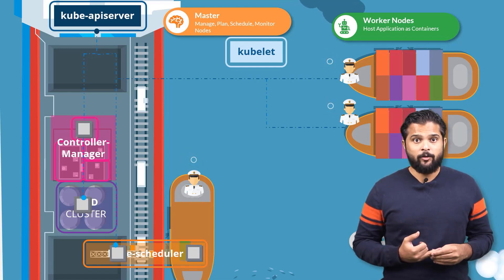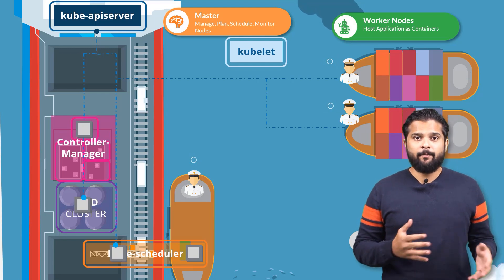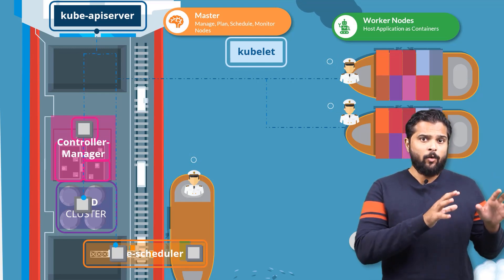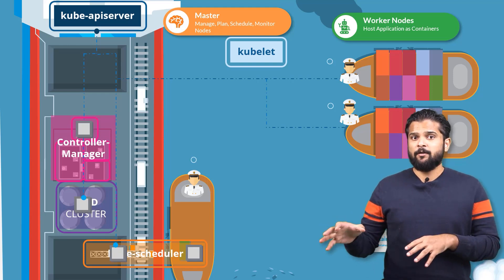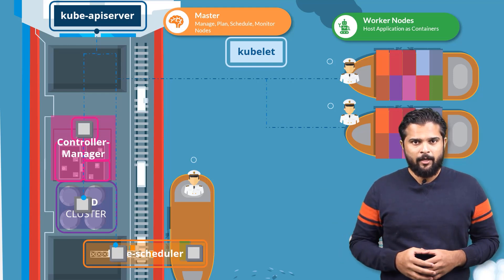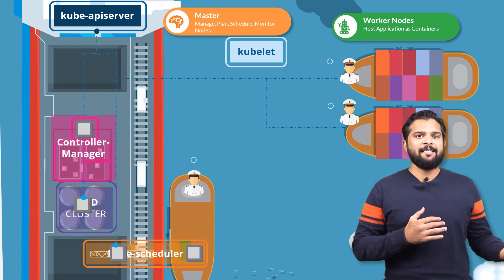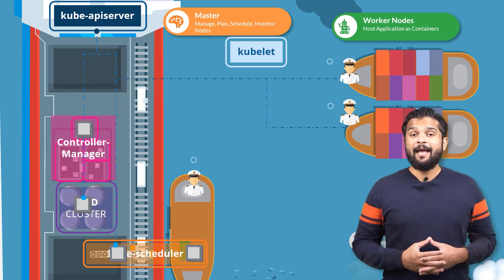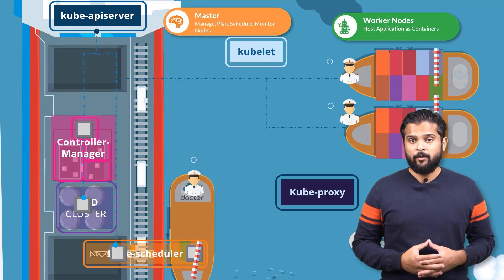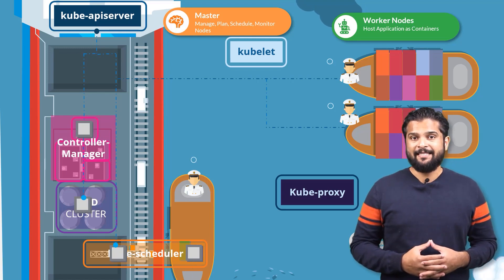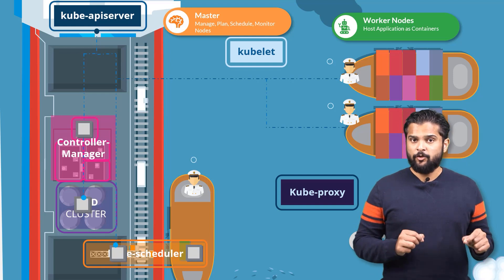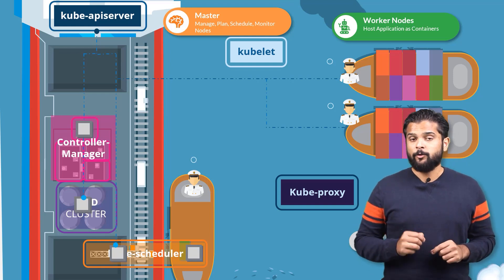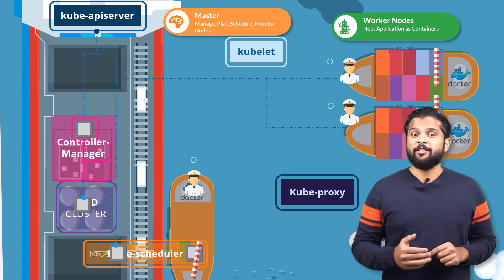The applications running on the worker nodes need to be able to communicate with each other. For example, you might have a web server running in one container on one node and a database server running on another container on another node. How would the web server reach the database server on the other node? Communication between worker nodes is enabled by another component that runs on the worker node known as the kube proxy service. The kube proxy service ensures that the necessary rules are in place on the worker nodes to allow the containers running on them to reach each other.